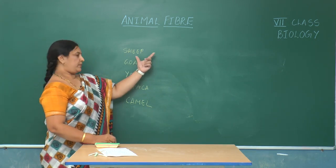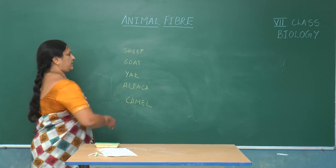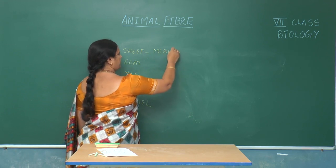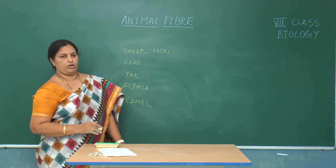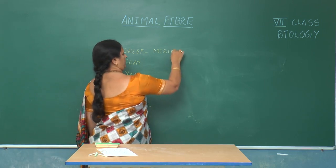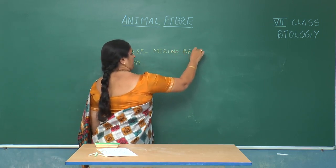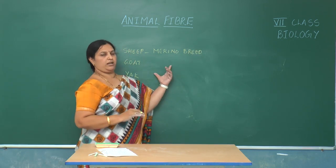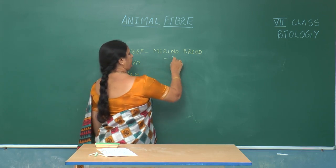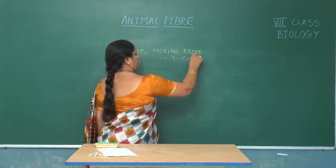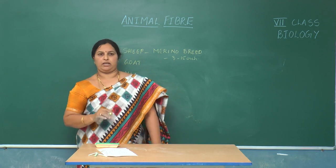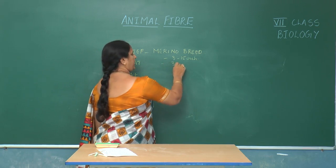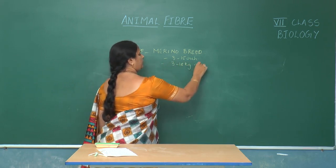The woolen fiber produced from sheep — mainly the merino breed of sheep — is famous for its best quality of wool. The fleece or hair of this animal is 3 to 15 inches long, it is highly valuable, and on an average it produces 3 to 18 kilograms of wool per year.